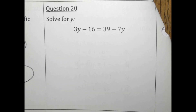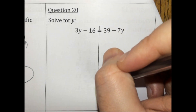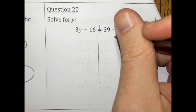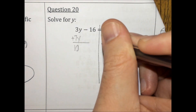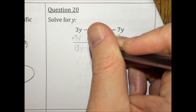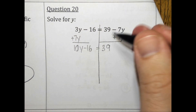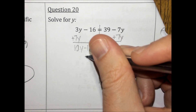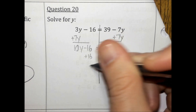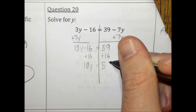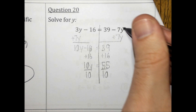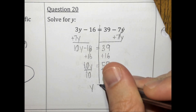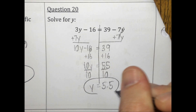Solve for y: 3y minus 16 equals 39 minus 7y. When you have variables on both sides, it's a good idea to move the smaller variable. So I'm going to do plus 7y to both sides to get all the variables on one side. We get 10y minus 16 equals 39. Then plus 16 to both sides gives 10y equals 55. Divide both sides by 10 and we get y equals 5.5.